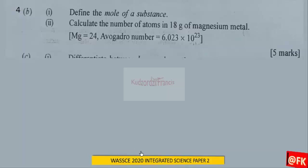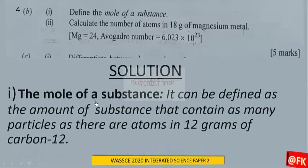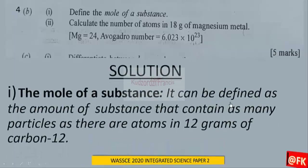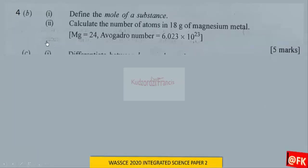Question 4b(i): Define the mole of a substance. The mole of a substance can be defined as the amount of substance that contains as many particles as there are atoms in 12 grams of carbon-12. Now let's consider part II: calculate the number of atoms in 18 grams of magnesium metal.